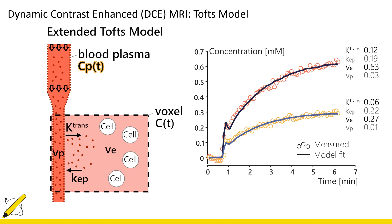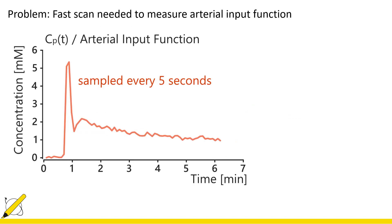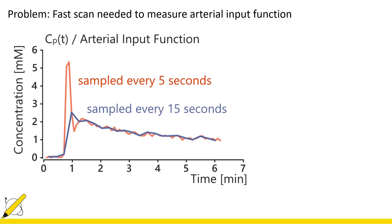The arterial input function is hard to measure because it requires a fast sampling rate in order to characterize the initial peak. In this case the input function was sampled every five seconds, but had it been sampled at 15 seconds then the initial peak would have been missed entirely.